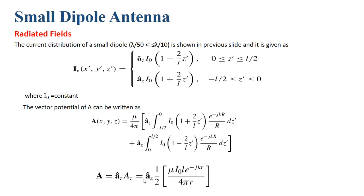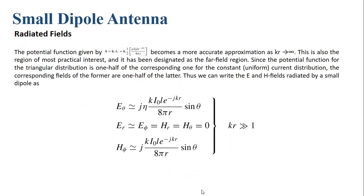The magnetic vector potential A of the infinitesimal dipole is a_z̄ · μi₀l · e^(−jkr) / (4πr), so for the small dipole it is half of that. In the far-field region, since the vector magnetic potential A for the triangular current distribution is one-half of the A for the constant (uniform) current distribution of the infinitesimal dipole, the corresponding fields will also be one-half of the fields with uniform current distribution.